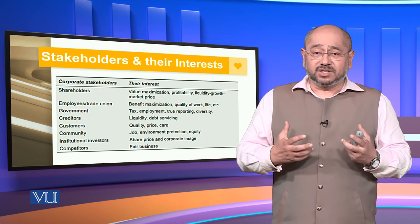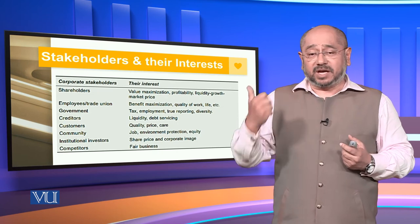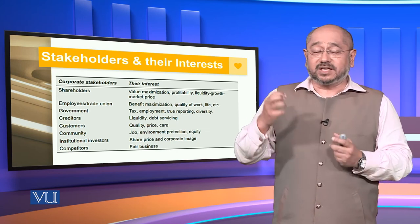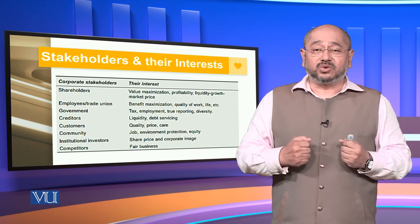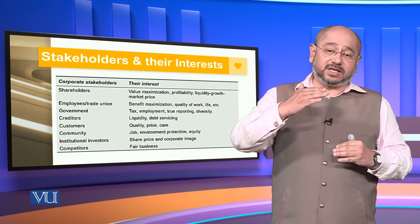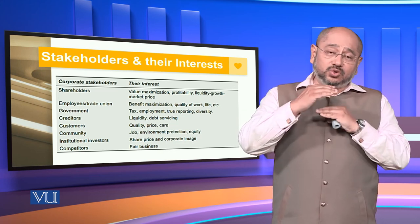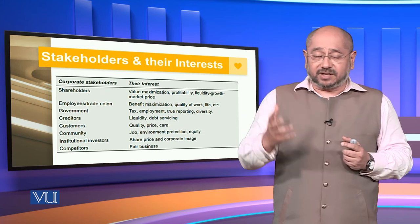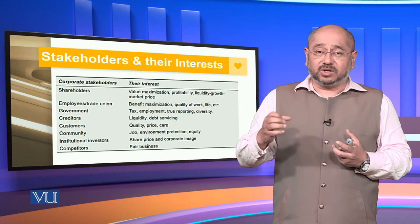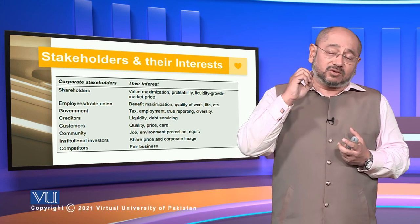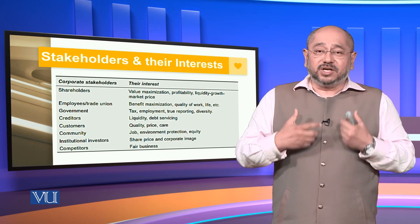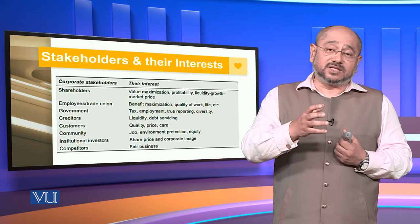The community wants jobs, environmental protection, equity, merit-based treatment, and compassion. Institutional investors are focused on share price and corporate image as a whole. Competitors want fair business and fair competition. Corporate stakeholders can be many and these are the ones usually fixed in any particular business. We can identify them to ensure a balanced approach within the legal framework, with no conflicts of interest, so that a healthy economy can emerge as a consequence of good governance and corporate governance.